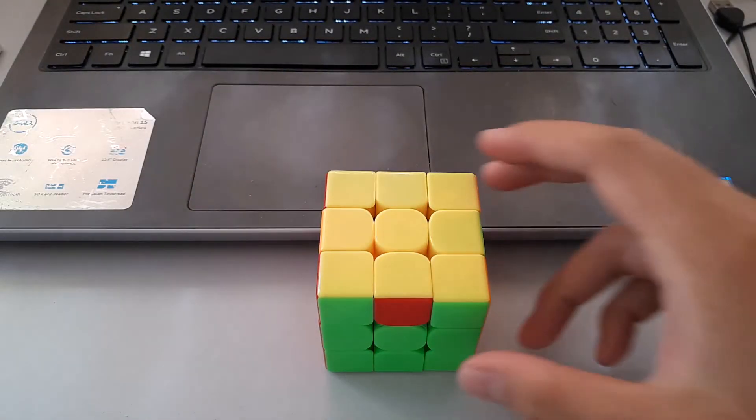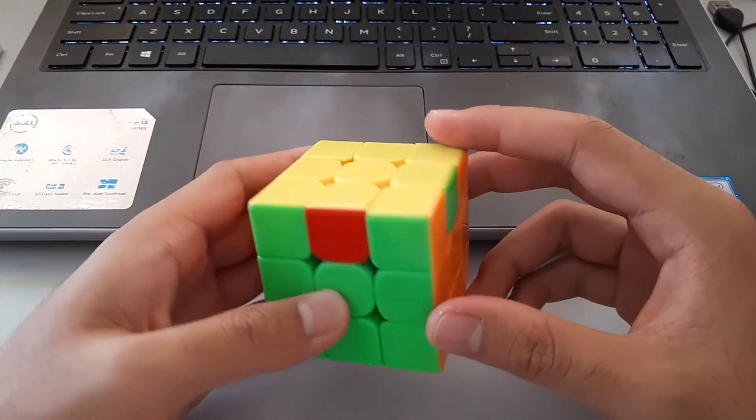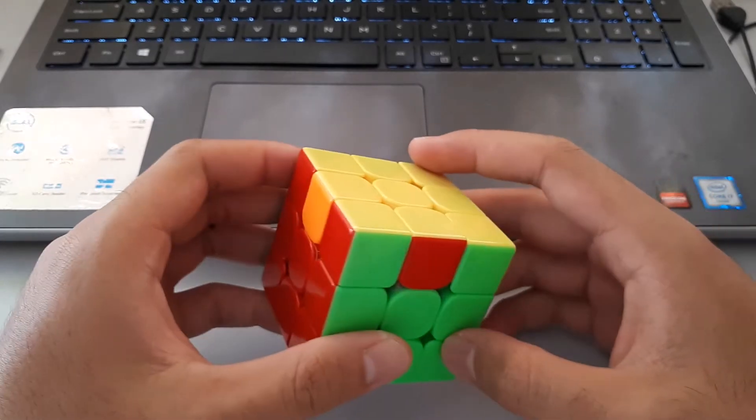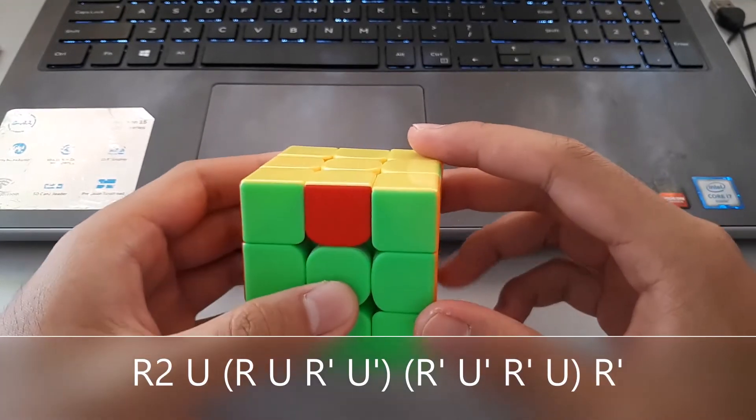So the algorithm for the U-B perm is actually quite similar to the one for U-A as well, and it's also pretty fast. It goes like this.